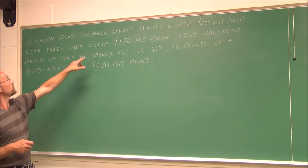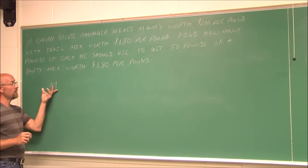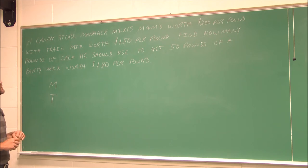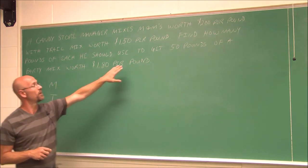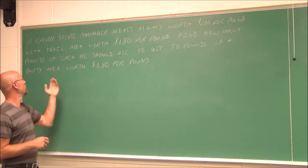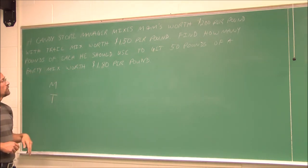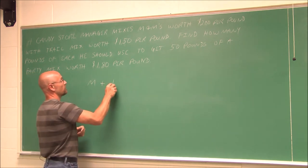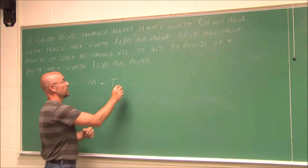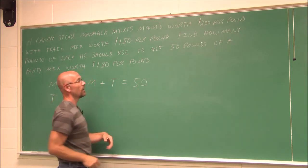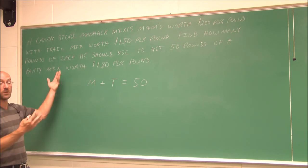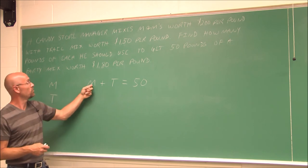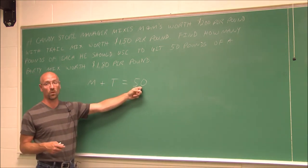Well, we have M&Ms and we have trail mix. So I'm going to have M as my variable for the M&Ms and T as my variable for the trail mix. And then we're told that we have to have 50 pounds of our end mixture, our party mix. So what do I know about that? Well, if I take the pounds of M&Ms plus the pounds of the trail mix, it will equal 50 pounds of our total mixture that we're making. So this is our volume that we have. Pounds of this plus pounds of that is total pounds of 50.